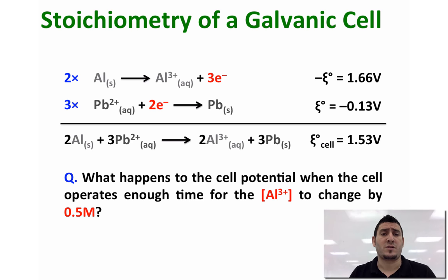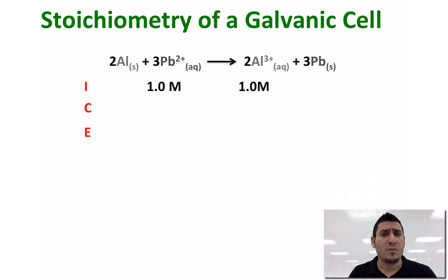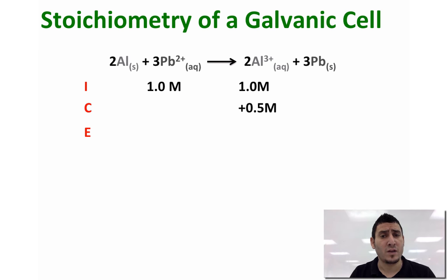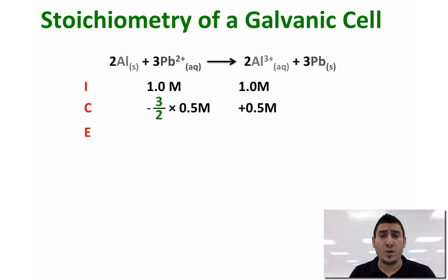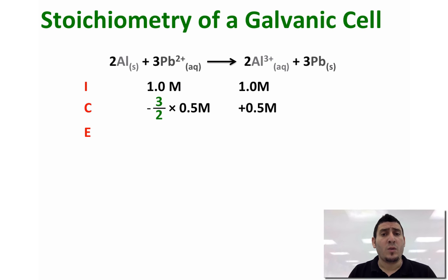To answer this question we will be using an ICE table. Initially both concentrations are equal to 1 molar. If the concentration of Al³⁺ changes by 0.5 molar, it will increase by 0.5 molar since Al³⁺ is a product. Therefore the concentration of Pb²⁺ will decrease by minus (3/2) × 0.5, where 3/2 is the molar ratio between Pb²⁺ and Al³⁺. At the end, the total concentration will be 1.5 molar for aluminum and 0.25 molar for lead.